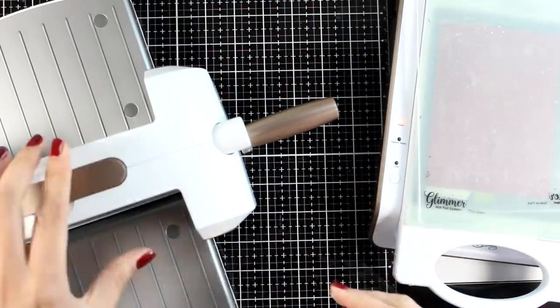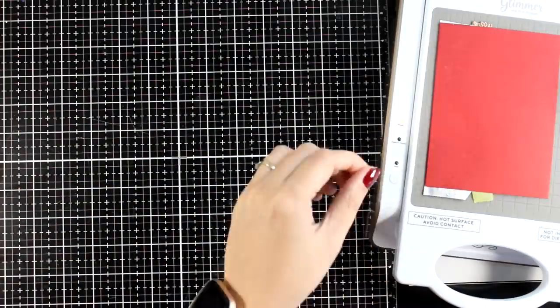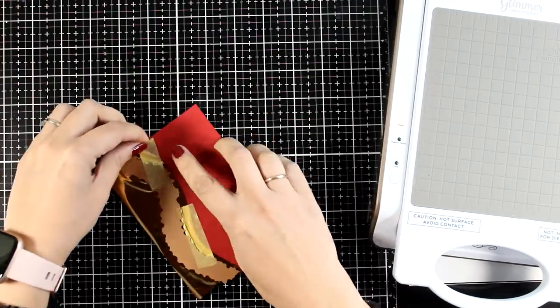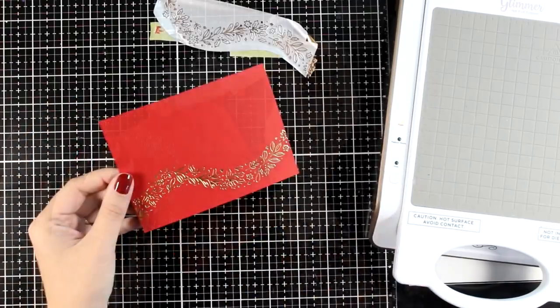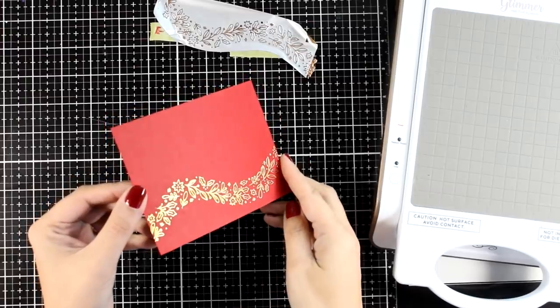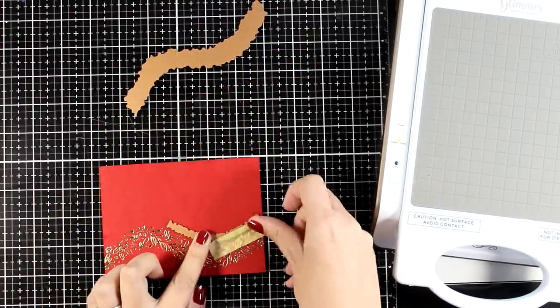And of course the most satisfying part is when you peel off the foiling and see what's there. It was absolutely perfect, no over foiling at all. And of course since I didn't do it in the first step, I have to do it now.